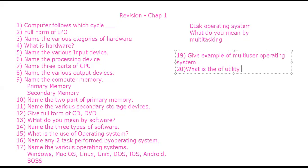What is the use of utility software? Utility software is used to maintain the computer, clean storage, collect fragmented data, and protect the computer from viruses.